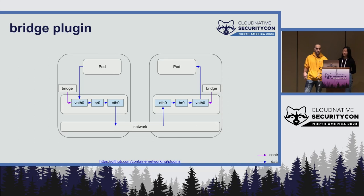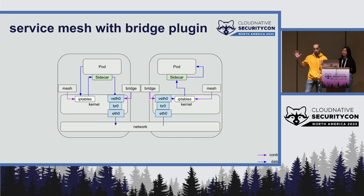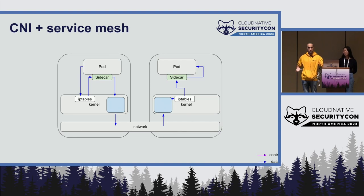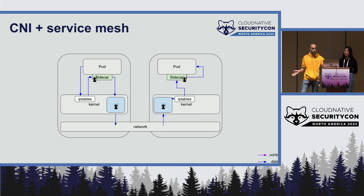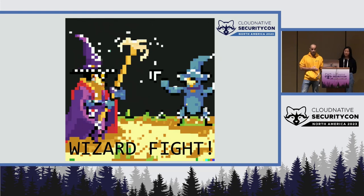If we mix the bridge plugin with a service mesh in a visualization it gets very busy. From here on out, our diagrams will assume container networking and IP tables redirection are already configured. In this setup, the CNI could be using eBPF or IP tables to enforce network policy — CNI plugin policy enforcement happens in the kernel, while service mesh policy enforcement happens at the sidecar. This gives us two different policy enforcement points, with one wizard in the sidecar and one wizard in the kernel.